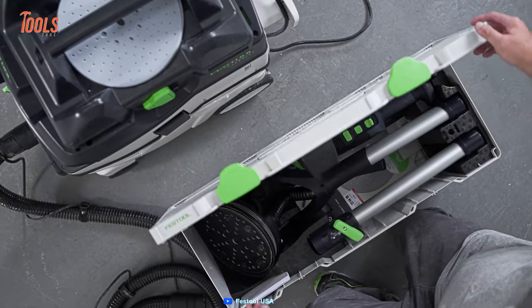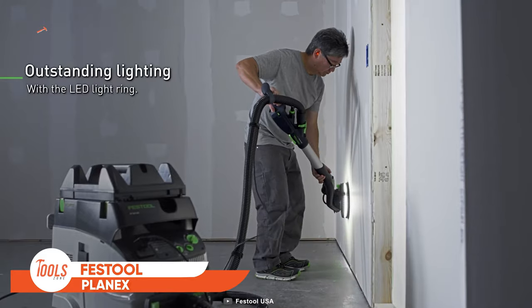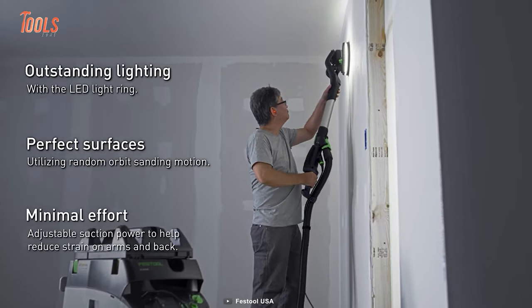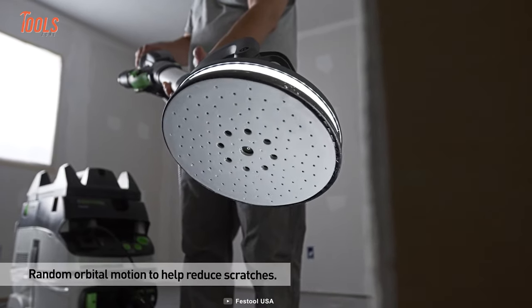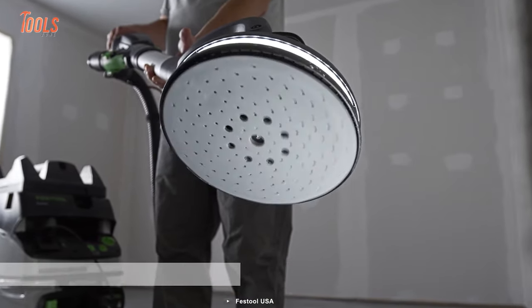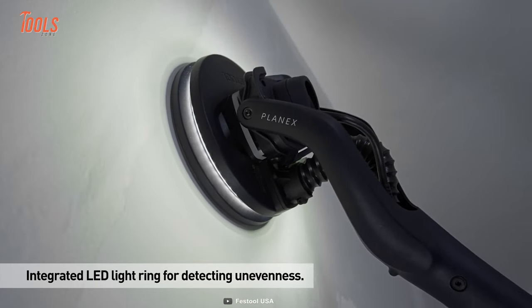What makes this Festool drywall sander so unique? First and foremost, the Festool Planex takes minimal effort and time to assemble. Plus, it utilizes random orbit sanding motion for the best-in-class finish and features an outstanding LED light ring to offer great illumination.